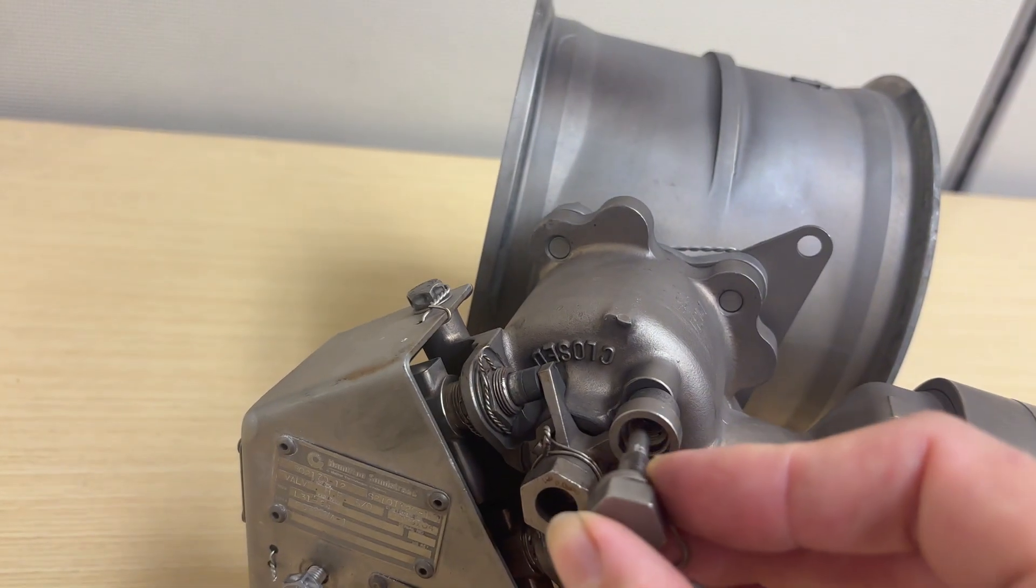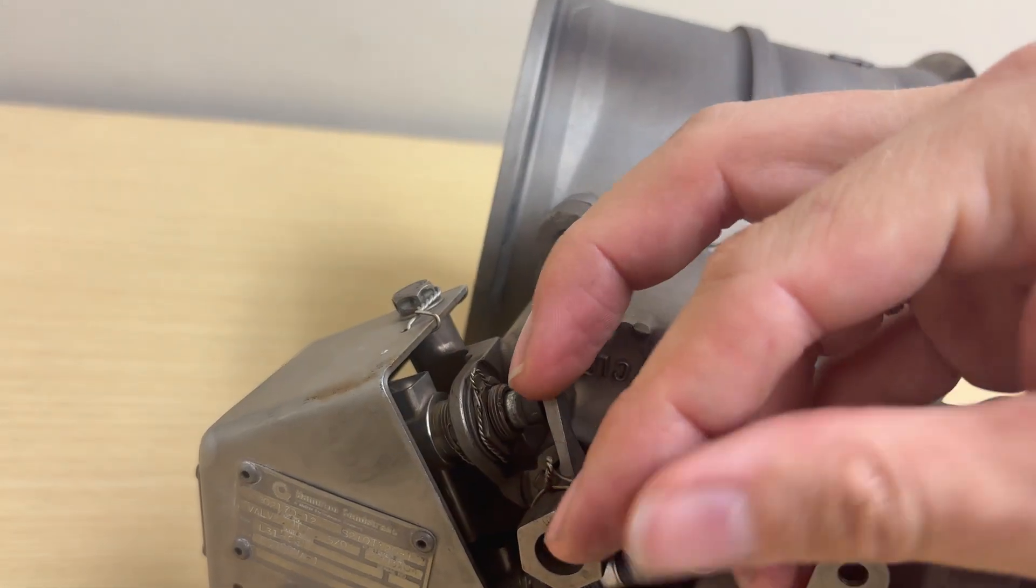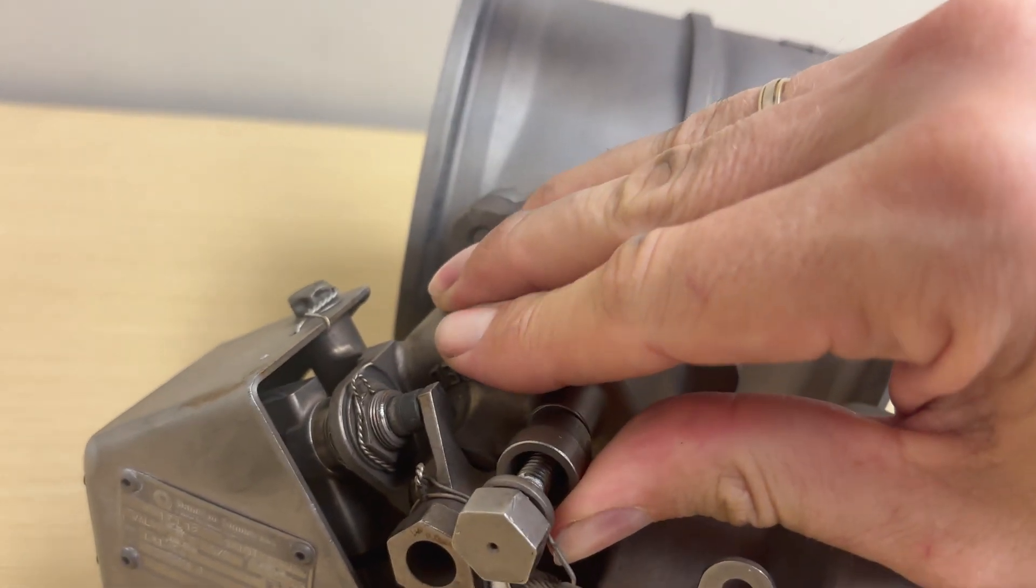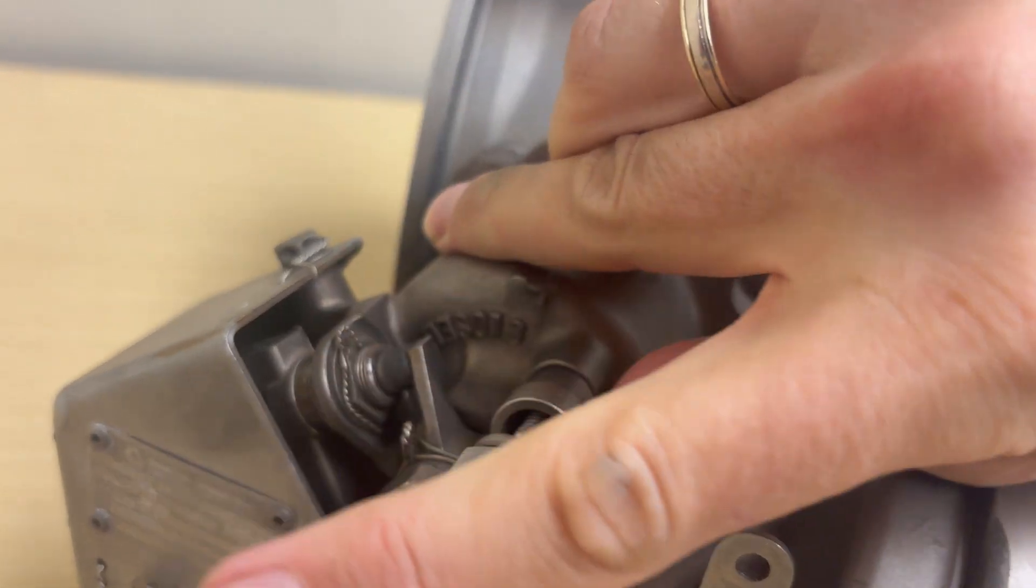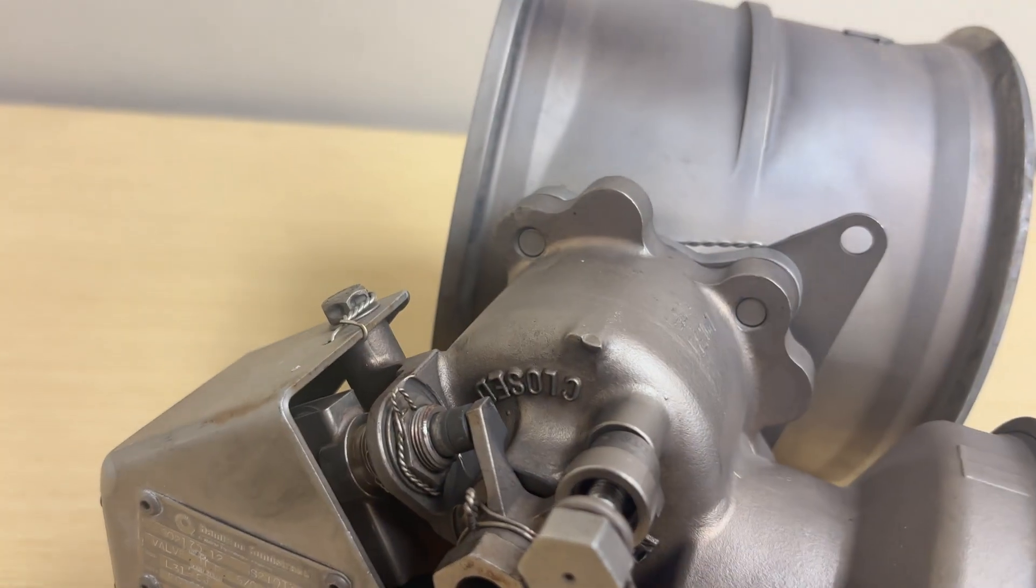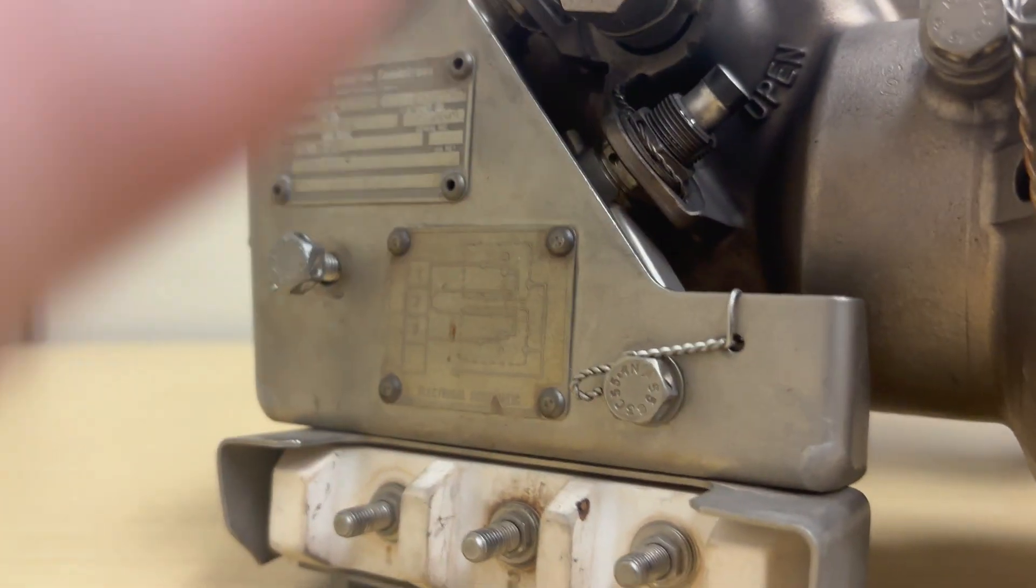And here you see how you can deactivate the HP valve. You remove one plug from the air chamber, that's then vented to ambient, so it cannot be pressurized anymore.